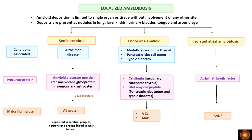In localized amyloidosis, deposition occurs in a single organ or tissue. Senile cerebral amyloidosis, seen in Alzheimer's disease, has amyloid precursor protein as the precursor — a transmembrane glycoprotein that is broken down to yield the amyloid fibrillary protein, the beta amyloid protein. This beta amyloid protein deposits in the brain substance, in neurons, and in blood vessels.